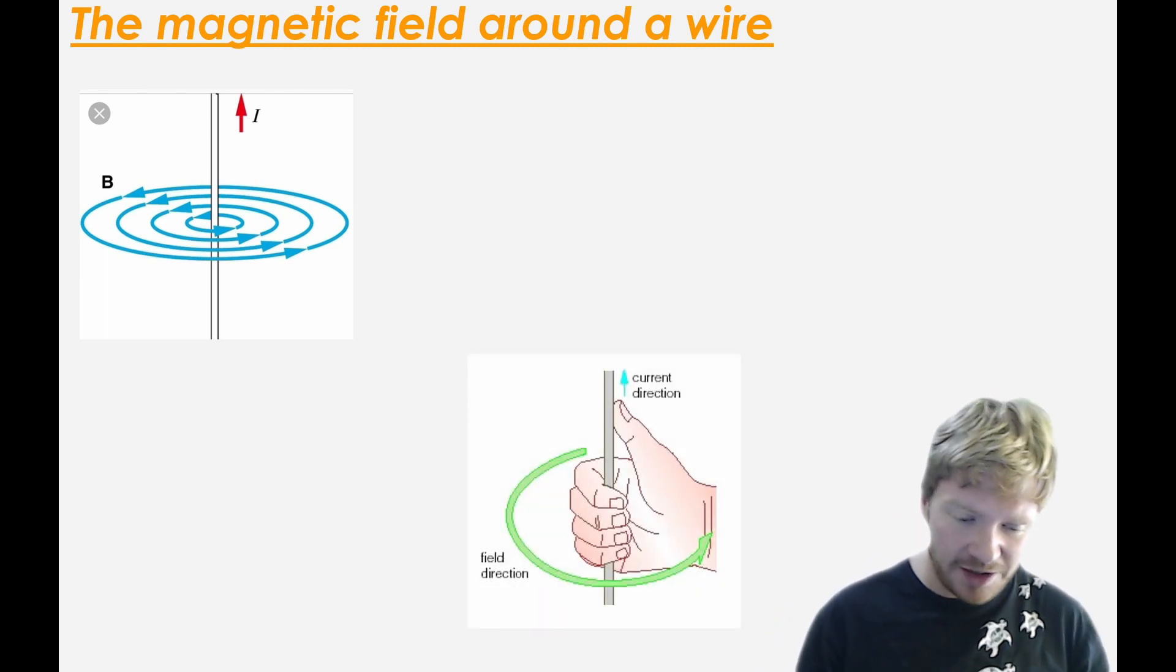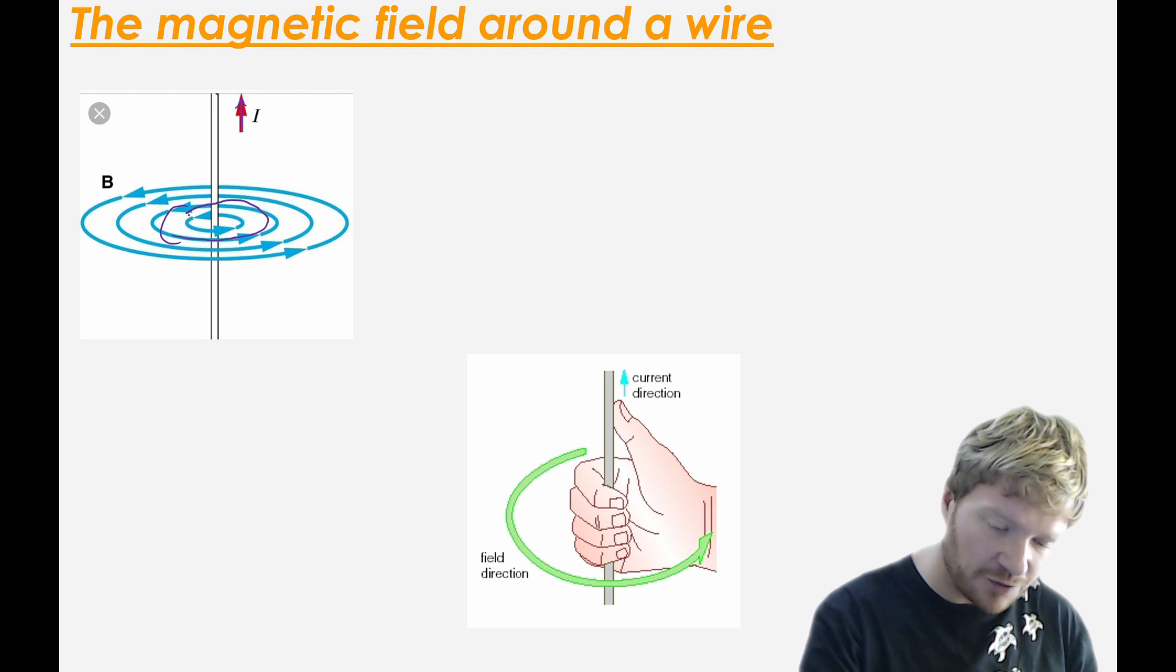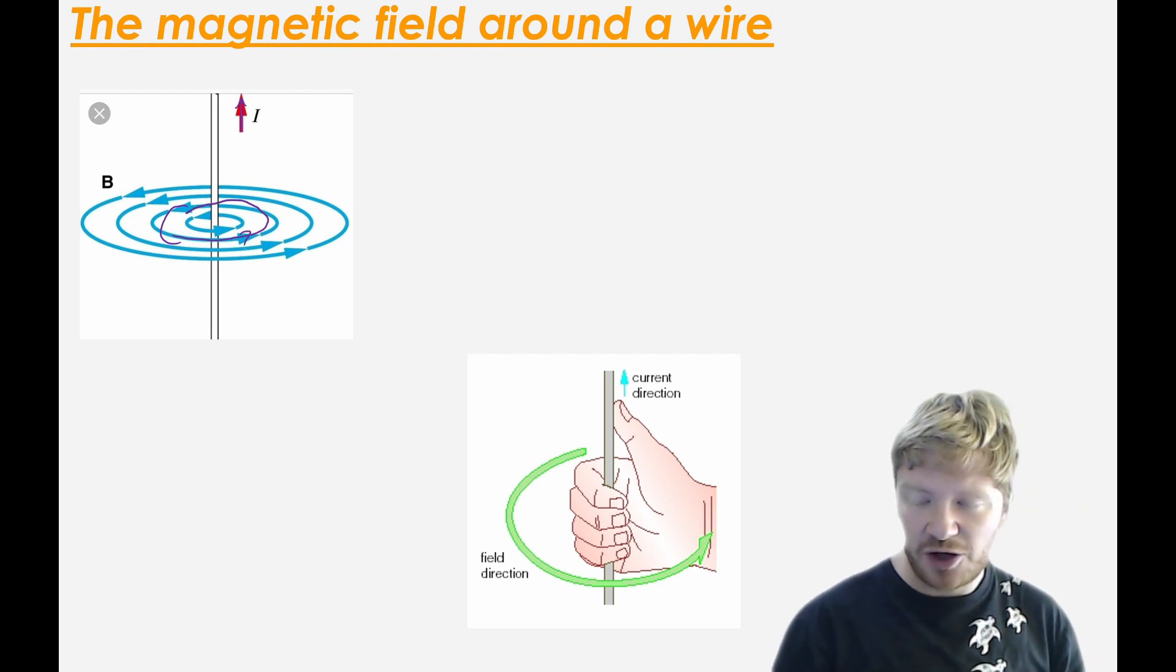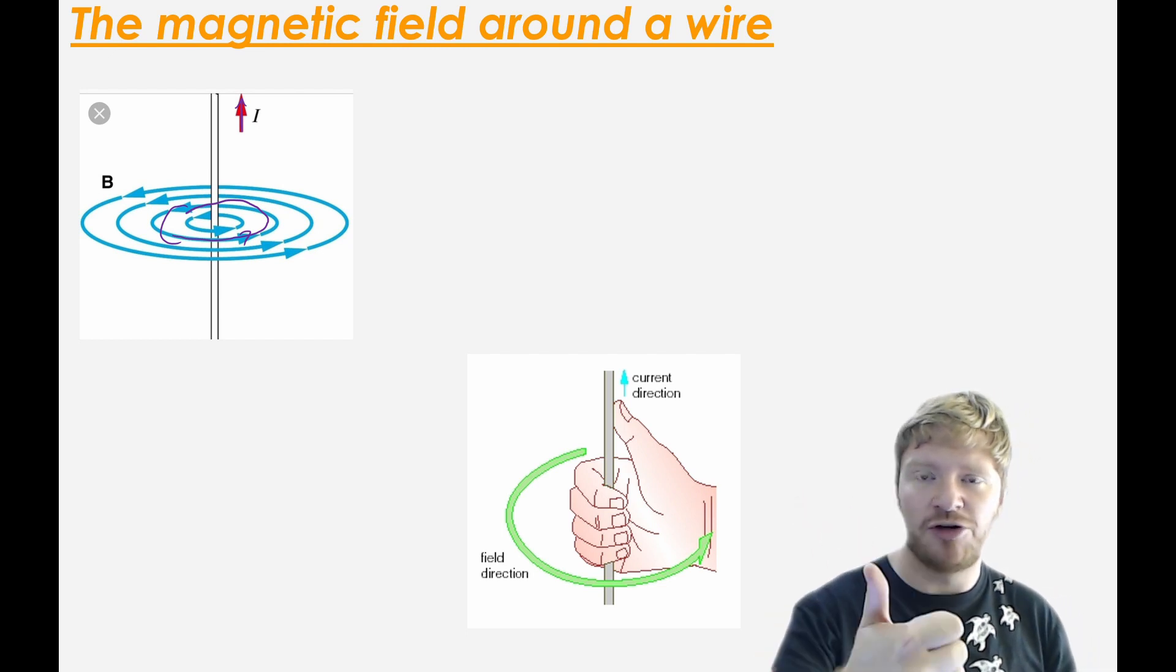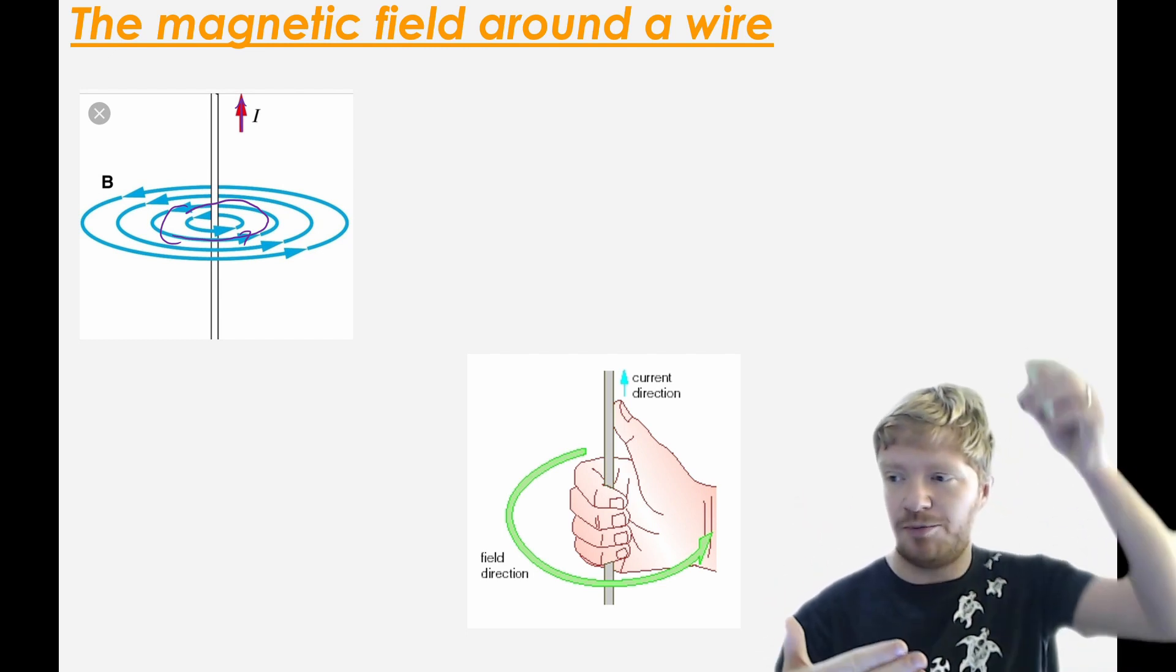However, as you can see, in this case, I have current going up towards the top of the page and the field lines go around it like they have been drawn. So the first rule we're going to come to is called the right-hand grip rule. And the right-hand grip rule is really simple.